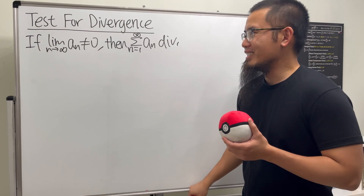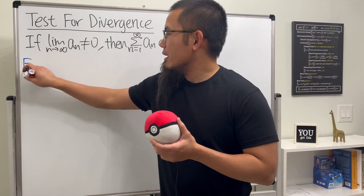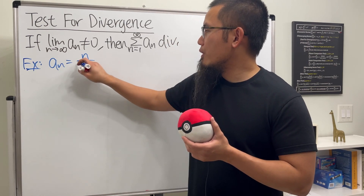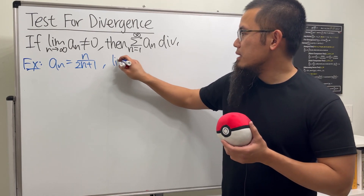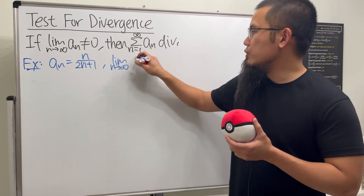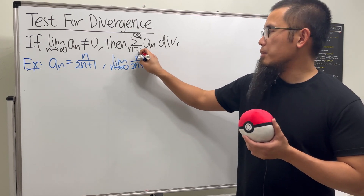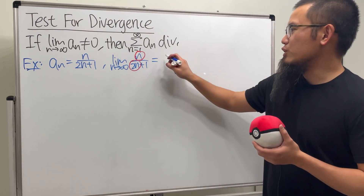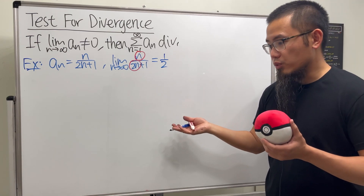Let me give you an example to illustrate why this is the case. Let a_n equal n over 2n plus 1. If we take the limit as n goes to infinity of n over 2n plus 1, we just care about the leading terms — the pre-calculus way — and we get one half. One half is not equal to zero.